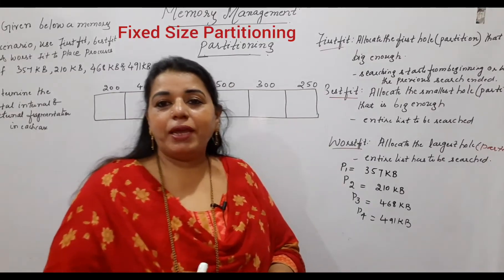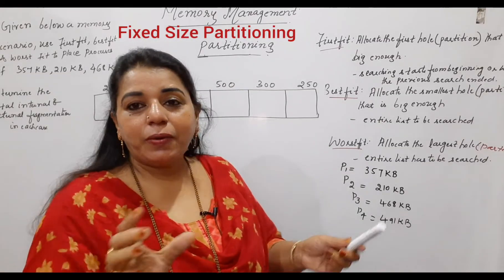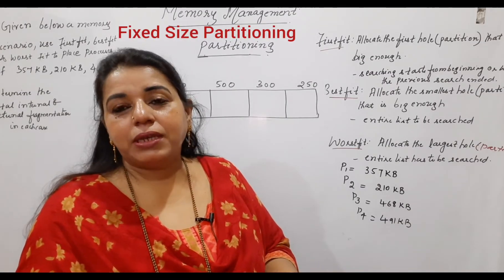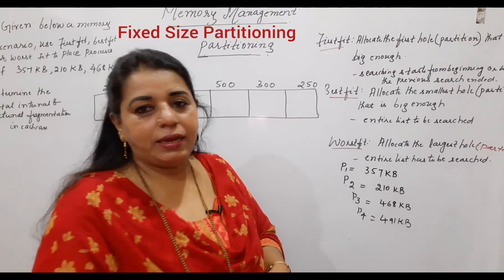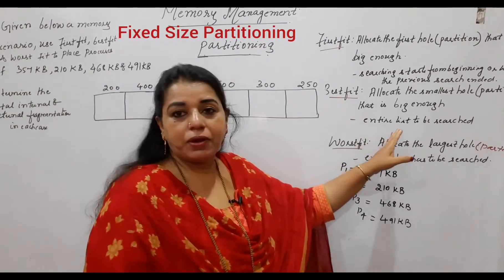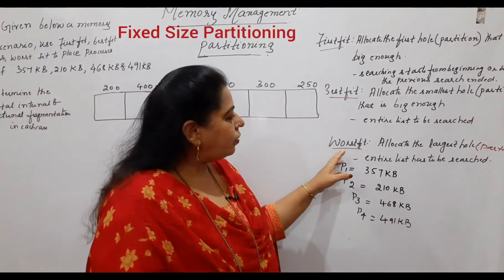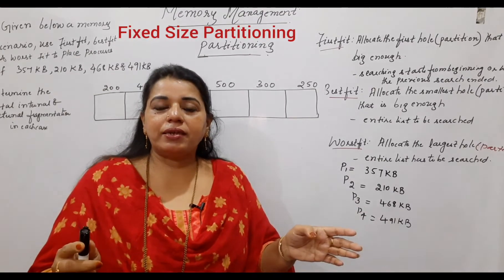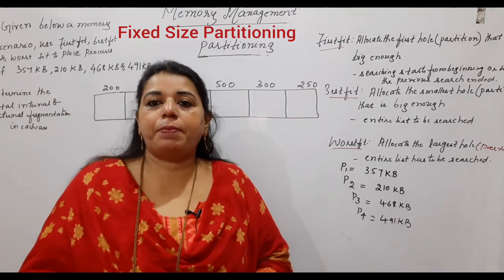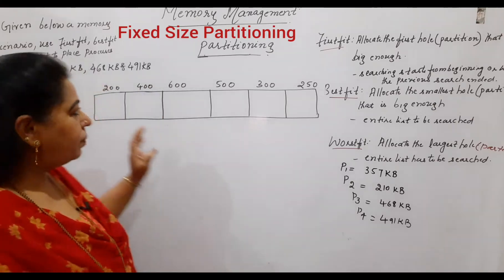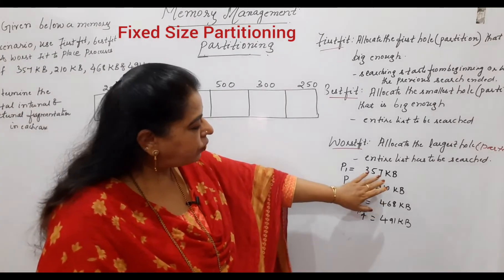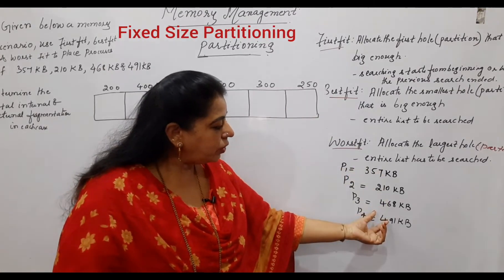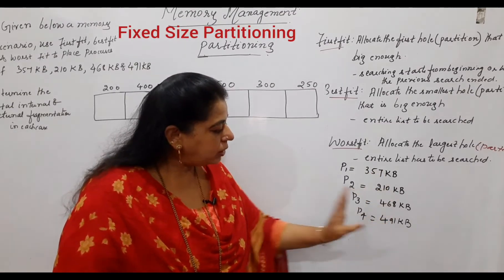Best fit says you have to use memory very efficiently — search for a partition that fits the process with exactly the same size or very little leftover space. For best fit, you have to search the entire list. Worst fit says allocate the largest partition, and again the entire list must be searched. Whichever is the largest available partition, use that first to allocate the process.